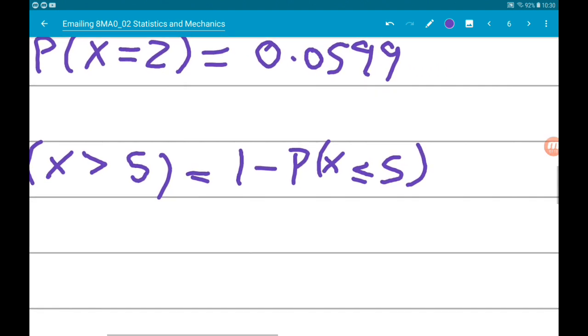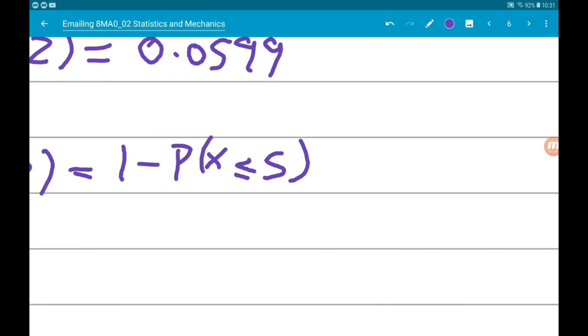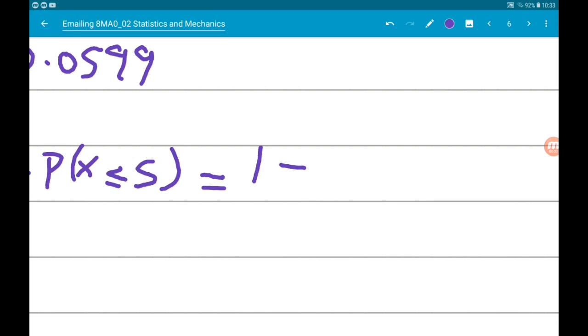We want binomial cd, which stands for cumulative distribution. That means it adds up all the probabilities for the values of x up to the one that we want. Go to binomial cd, put in x equals five, and we get one minus 0.618, which gives us 0.382.